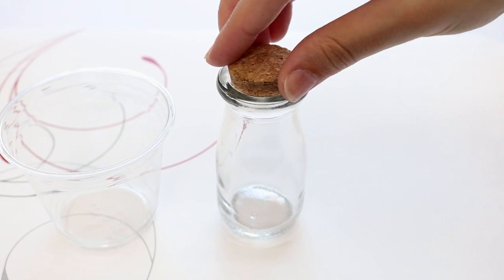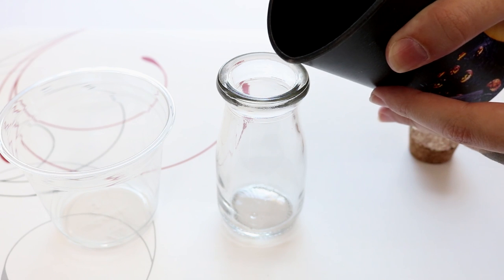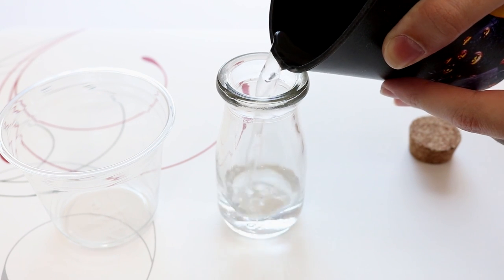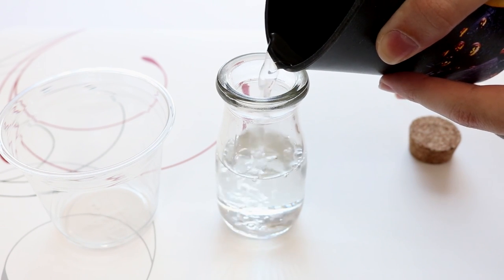The first thing we want to do is measure just how much potion we want in our bottle. Using water to fill it and decide the volume, mark that level with a sharpie onto your mixing cup.